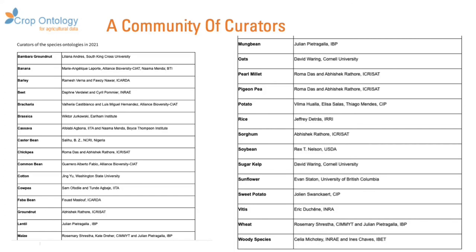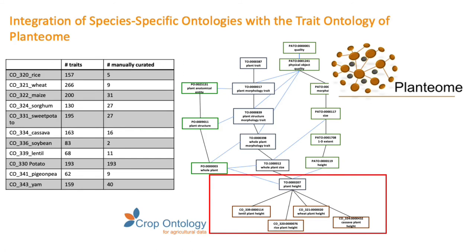The crop ontology cannot exist without the community of curators actively maintaining the ontologies, nominated by their centers. We also continue the integration of crop-specific ontologies into the trait ontology of Planteum — this is active work by Marie-Angélique Laporte and Laurel Cooper from Oregon State University — enabling a trait search on Planteum across species.